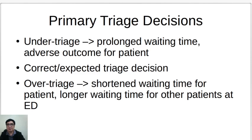There are three primary triage decisions. If you under-triage, you prolong the waiting time for the patient being triaged, which will lead to an adverse outcome. What we really want is the correct or expected triage decision. However, in some cases, you also over-triage, meaning that you assign a higher triage category to a patient. Although this shortens the waiting time for that particular patient, it also means that there is a longer waiting time for other patients at the emergency department.